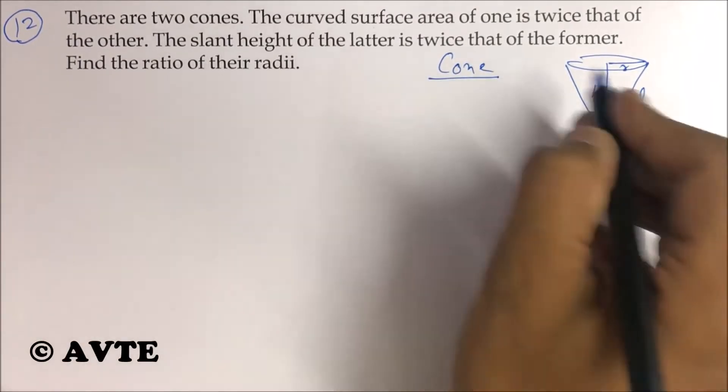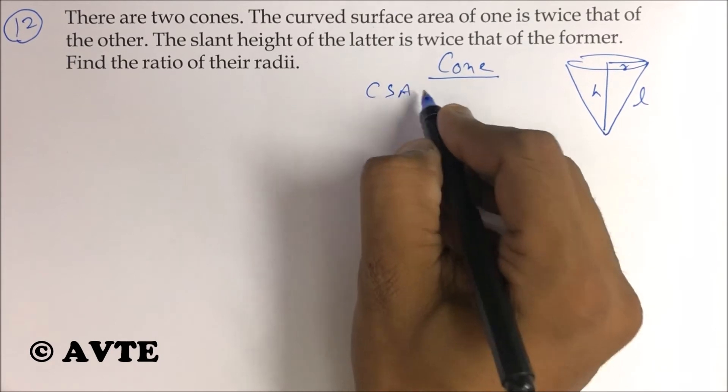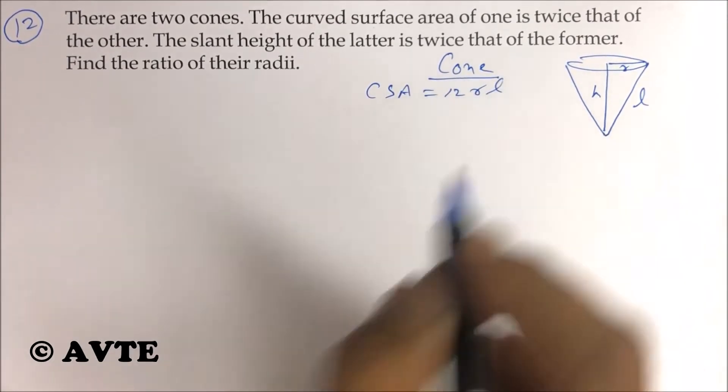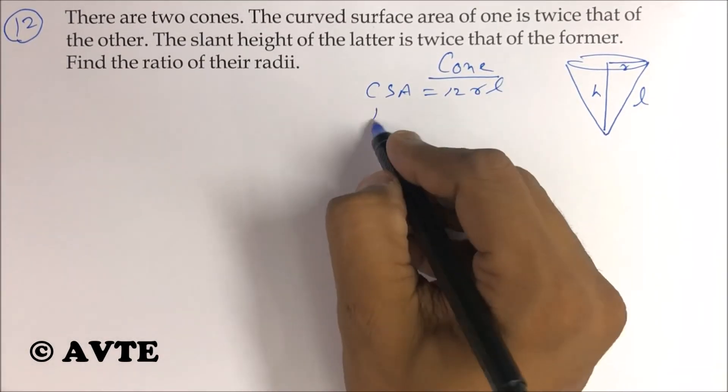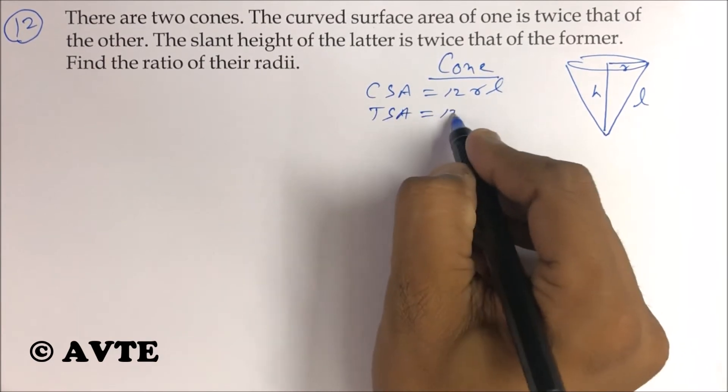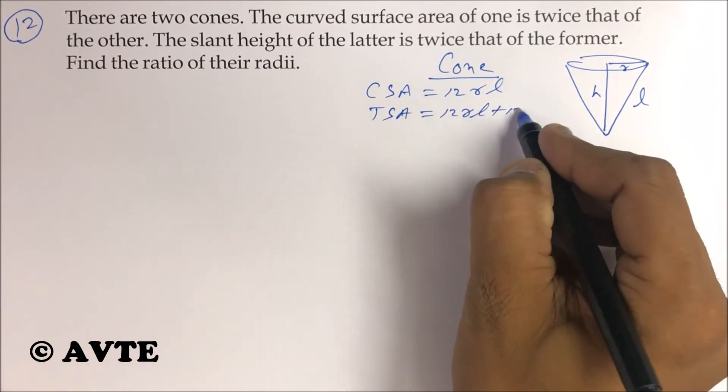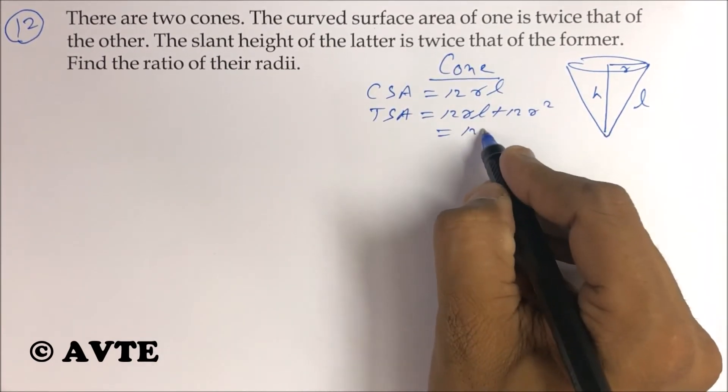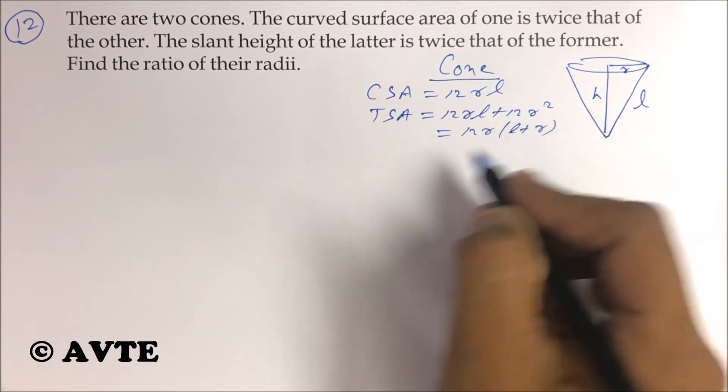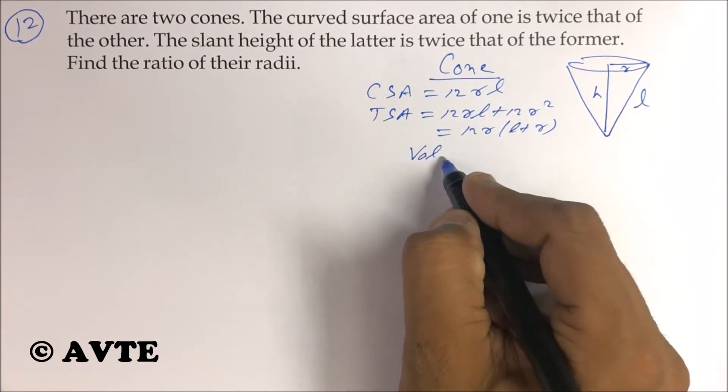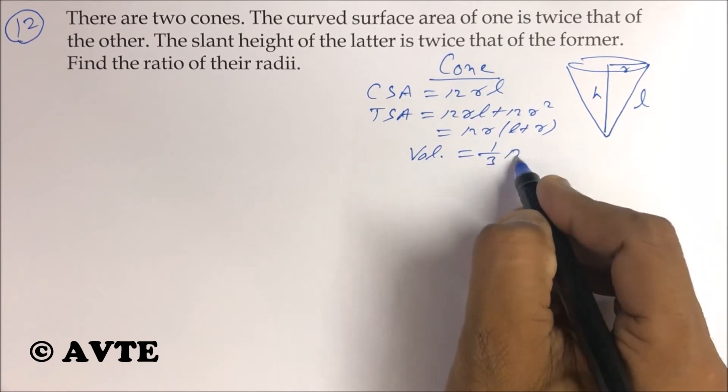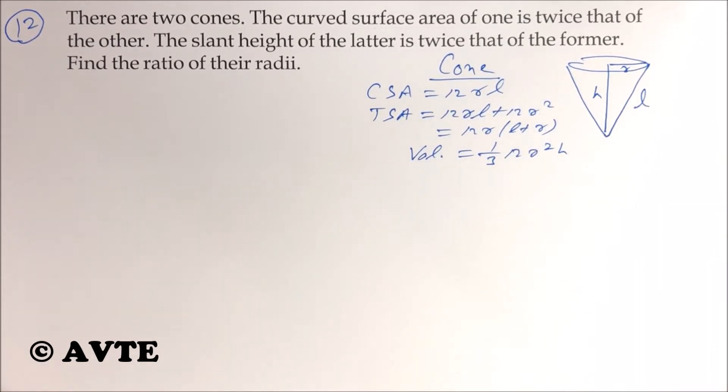In cone the CSA formula is pi r L and the TSA is pi r L plus pi r square, that means pi r in bracket L plus r, and the volume is one by three pi r square h. I always say every student must learn the formula by heart.